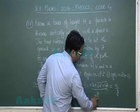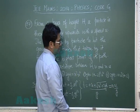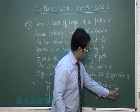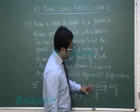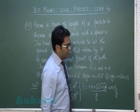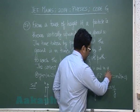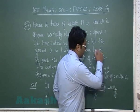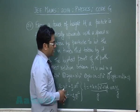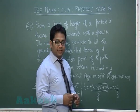Since the total time is n times the time of ascent, we set up the relation, square it, and manipulate to ultimately arrive at option D. That was question 37; we'll go to question number 38 now.